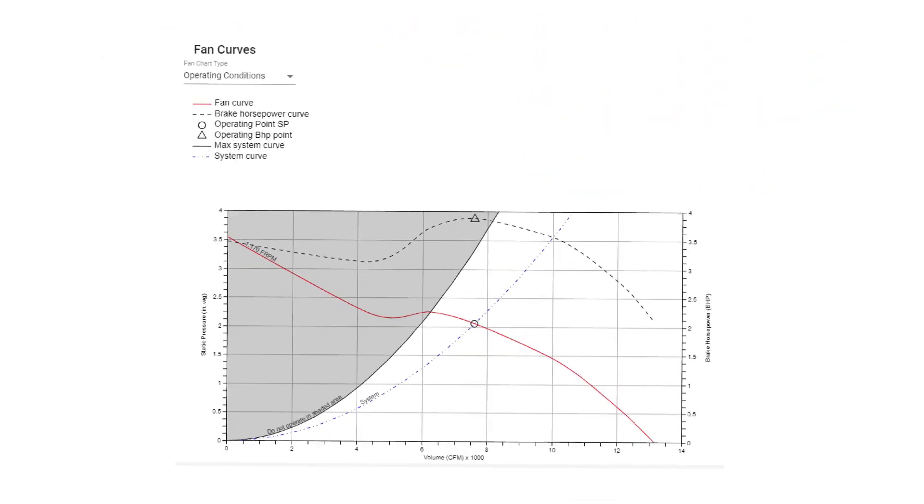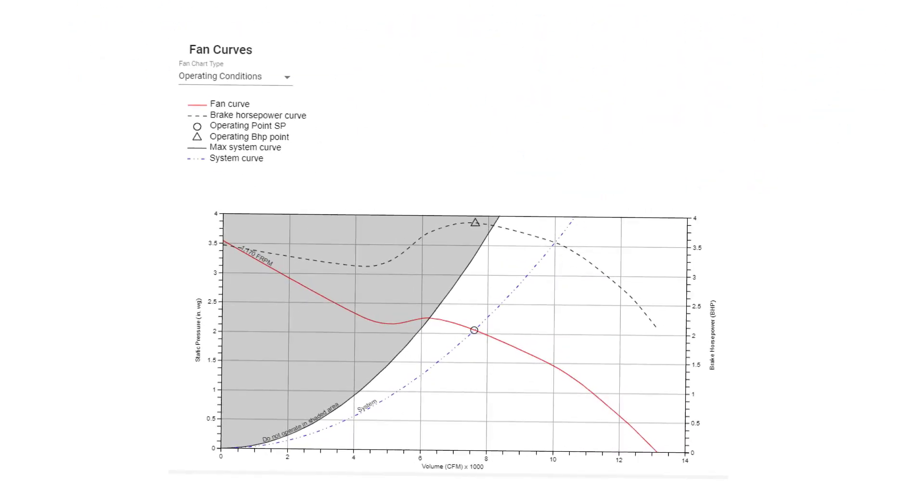So instead of drawing out a fan curve, I'm just going to pull one up from a selection I ran. This is for a QEID 24100 with a very green EC motor operating at 7500 CFM and 2 inches of static pressure at sea level. So there are a lot of lines on here, so let's break it down.